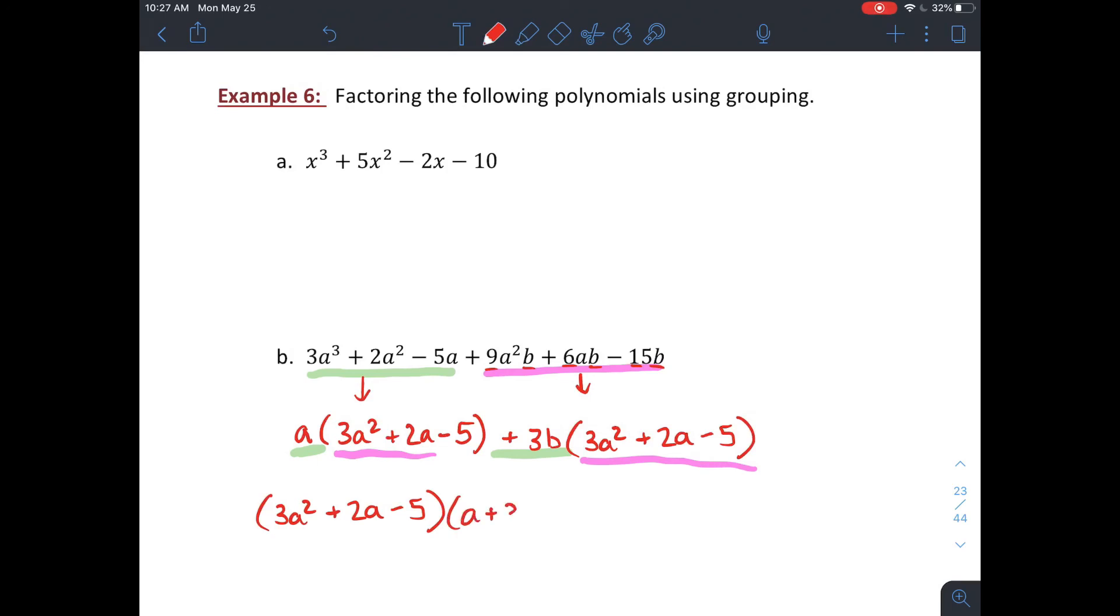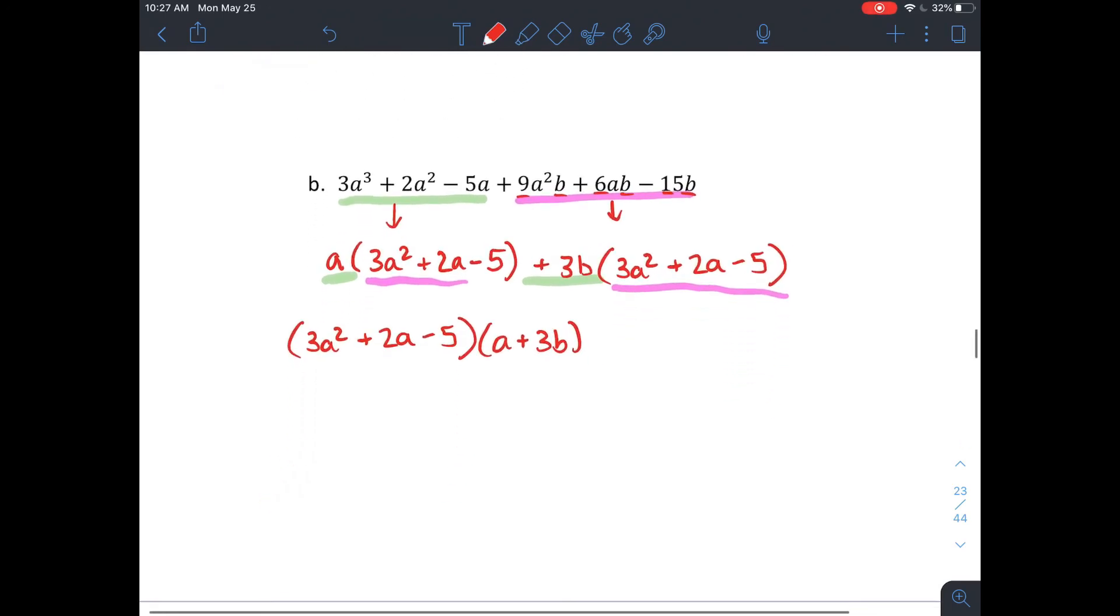Now you do need to go ahead and check and see if any of those groups factors further. Like if you look at that 3a squared plus 2a minus 5, it's quadratic, and it looks like it might factor further. So I'm going to use the discriminant and do b squared minus 4ac and see if it's a perfect square before I try to factor it. Well, that's going to give me 4 plus 60. Oh, 64 is a perfect square. Yep, it's going to factor further.